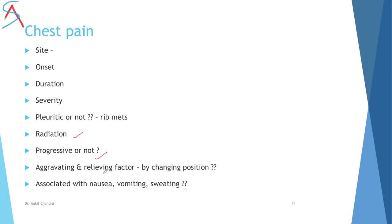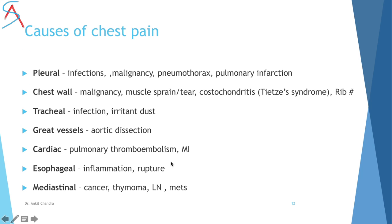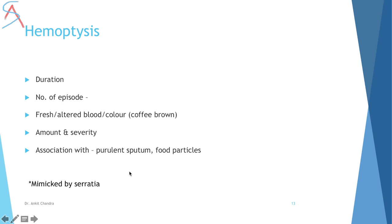Also ask about radiation, aggravating and relieving factors, and association with nausea, vomiting, or sweating — as these suggest myocardial infarction or cardiac causes. Causes of chest pain include pleural, chest wall, tracheal, great vessel (e.g., aortic dissection), cardiac, pulmonary embolism, myocardial infarction, esophageal rupture, and mediastinal causes.